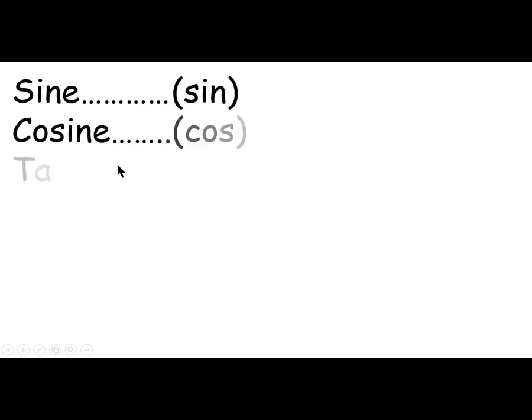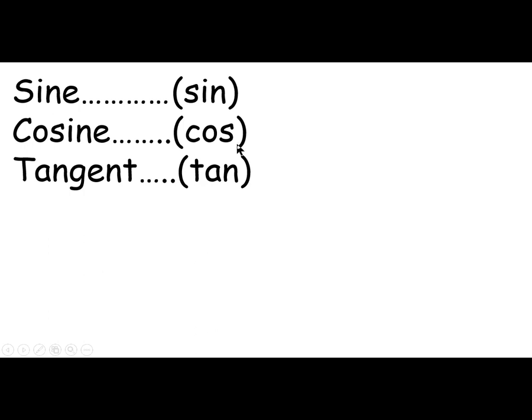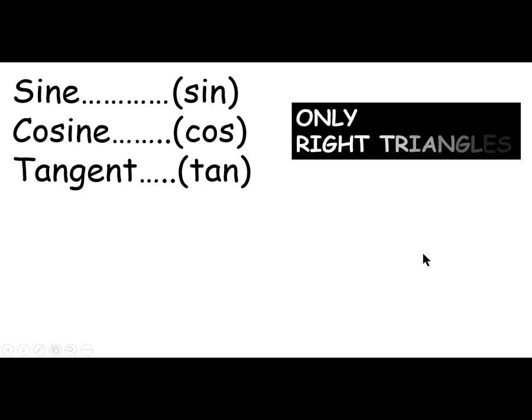First, you've probably seen these buttons on a calculator before: sine, abbreviated S-I-N; cosine and tangent, abbreviated C-O-S and T-A-N. We're going to use those and need to know what they are. All of our work is going to be in right triangles and only right triangles. If it's not a right triangle, we won't be able to do this. Right triangles — triangles with a 90-degree angle.